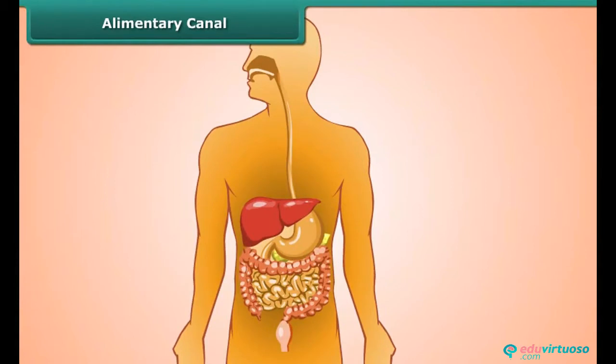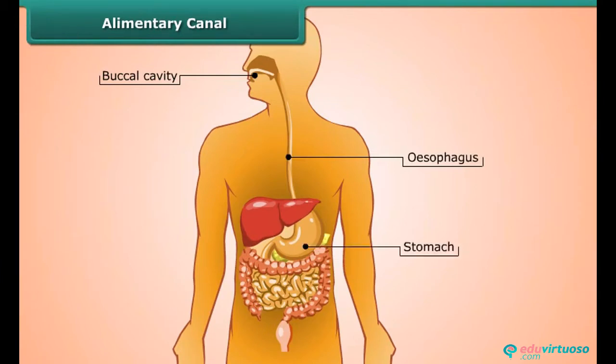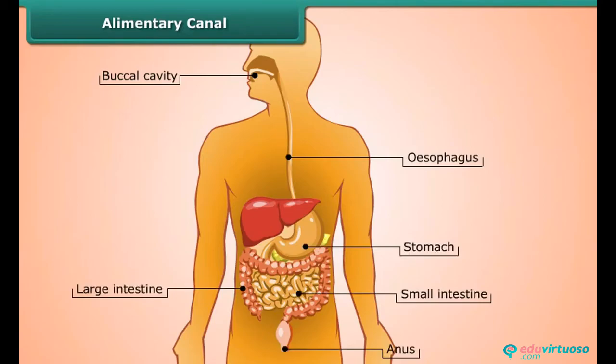The alimentary canal consists of buccal cavity, food pipe or esophagus, stomach, small intestine, large intestine, and the anus.